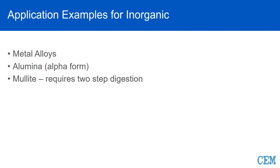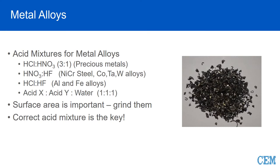Let's look at some inorganic digestion examples — a metal alloy, alpha alumina in its most stable form, and mullite, which requires a two-step digestion. For metal alloys, we use different acid mixtures: 3:1 HCl/nitric aqua regia for precious metals; nitric and HF for nichrome steel; and an HCl/HF mixture for aluminum and iron alloys. Surface area is important — grind samples to very small particulates. The correct acid mixture is really the key.